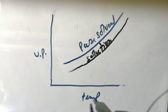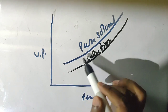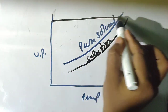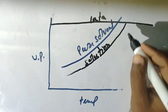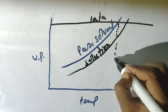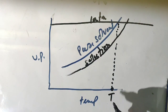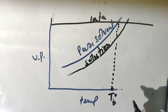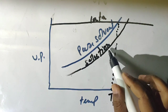It is obvious from this graph that the pure solvent has a higher vapor pressure while the solution has a lower vapor pressure. When the vapor pressure of the pure solvent equals 1 atm — shown by the 1 atmospheric pressure line — the corresponding temperature represents the boiling point of the pure solvent, denoted as Tb⁰.